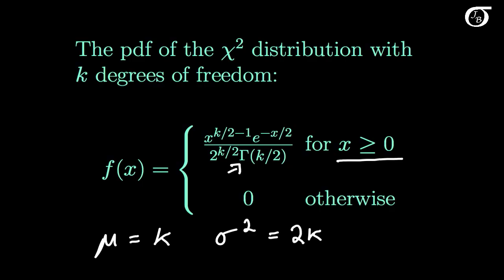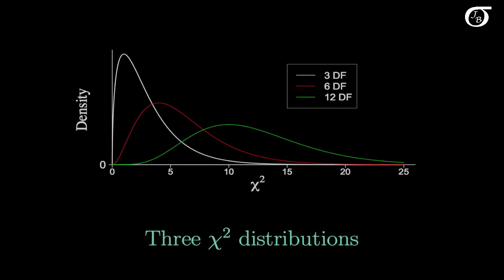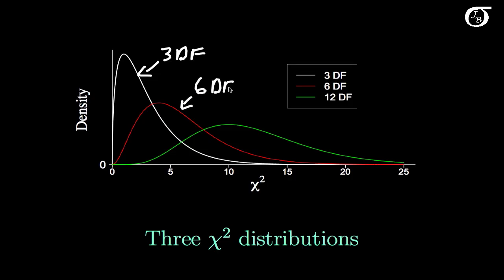Let's see what this looks like in a plot. Here I have three chi-square distributions plotted out. The chi-square distribution only has one parameter, the degrees of freedom, and that parameter tells us what the shape is going to be, what the mean is, and what the variance is. This is a chi-square distribution with 3 degrees of freedom, this is one with 6 degrees of freedom, and this is one with 12 degrees of freedom.